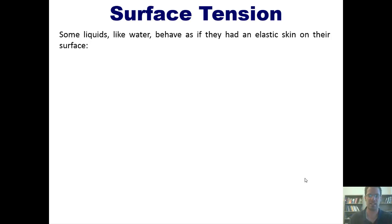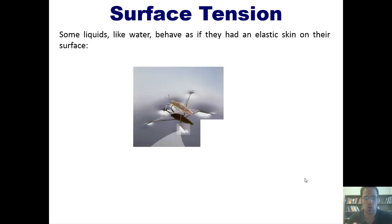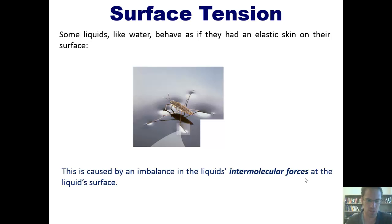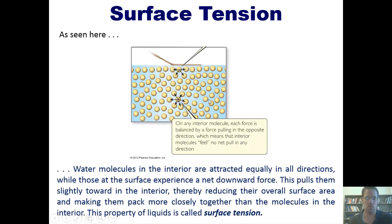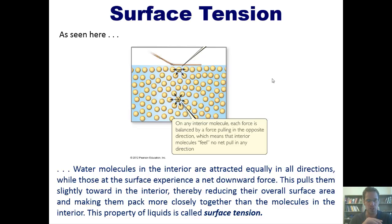Some liquids, such as water, behave as if they had an elastic skin on their surface. You can see that in this picture—it has a little water skeeter, probably a more technical name for it, but that's what we called them when I was a kid—gliding across the surface of a pond. This tension along the surface of a liquid is caused by an imbalance in the liquid's intermolecular forces right at that liquid's surface. Water molecules on the interior are attracted equally in all directions by intermolecular forces from the molecules around them, while the molecules at the surface only experience an intermolecular attraction that pulls them downwards—they feel a net downward force. That pulls them slightly toward the interior, which reduces the overall surface area and makes them pack more tightly together right at the surface than the molecules on the interior below them.